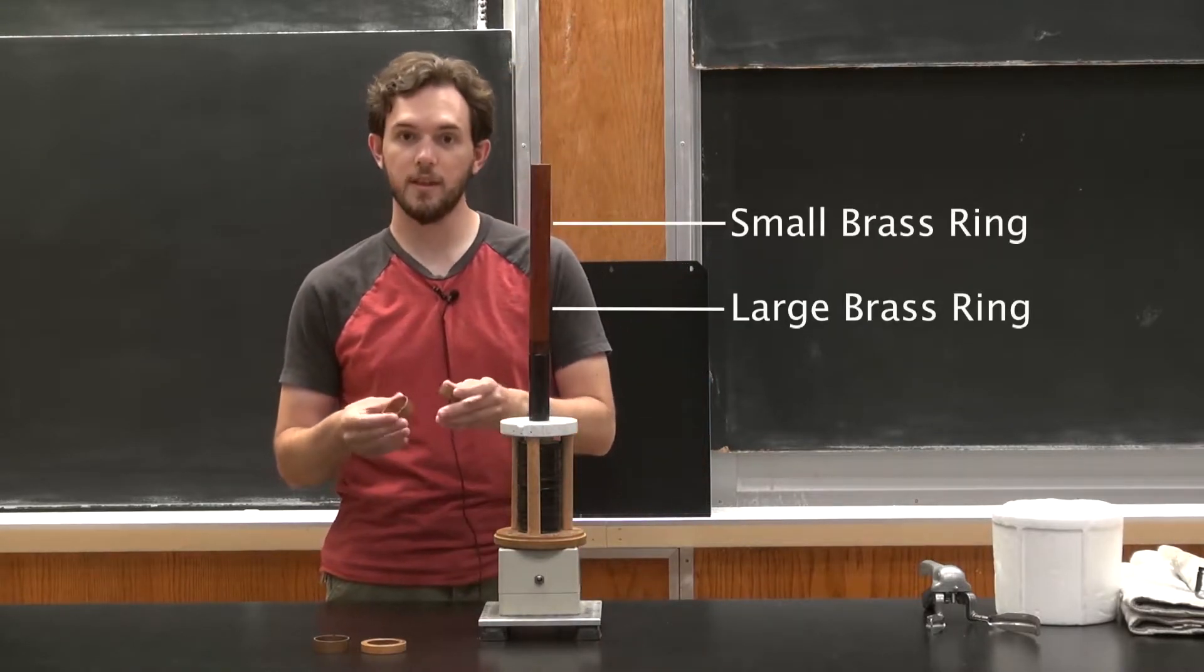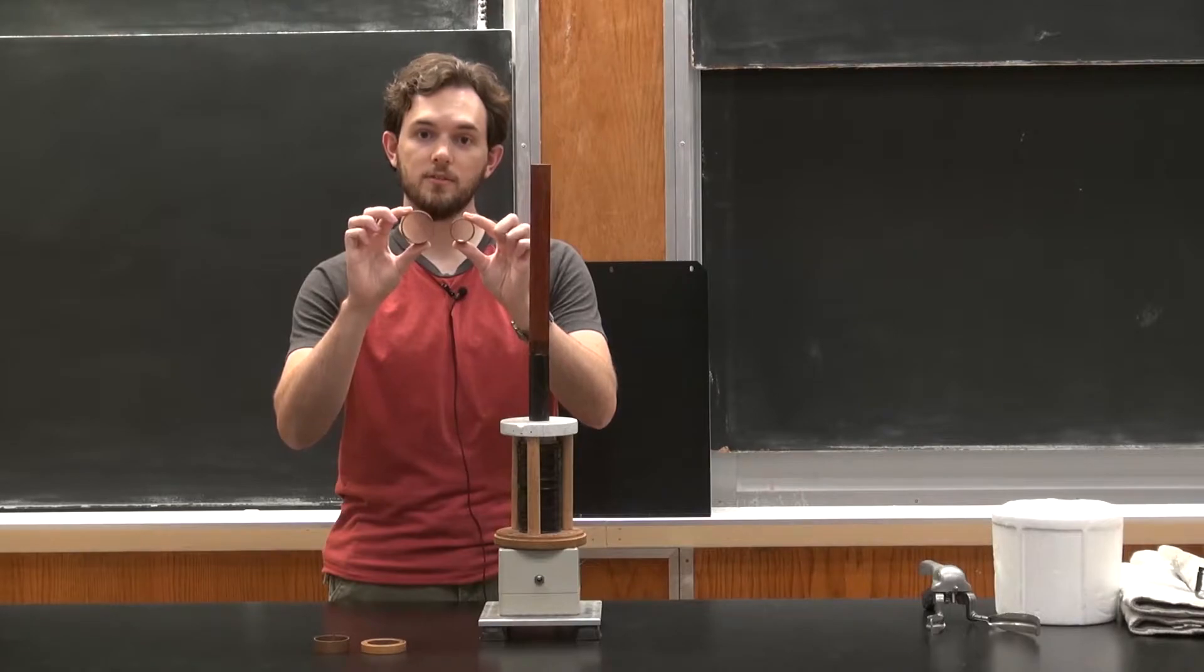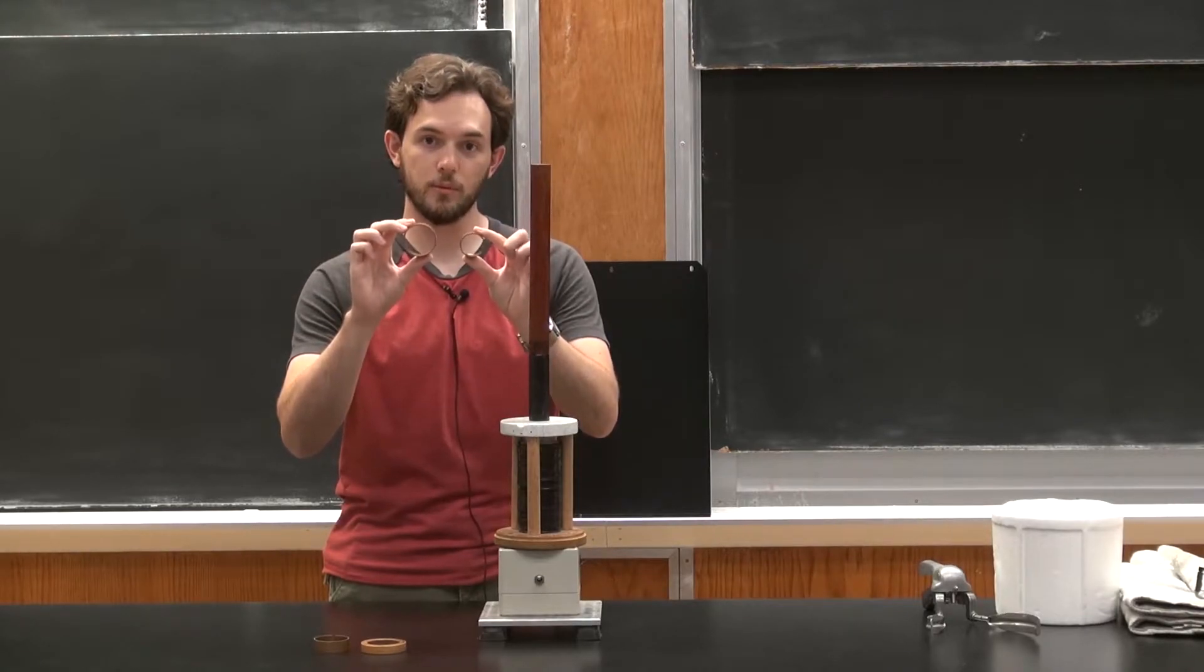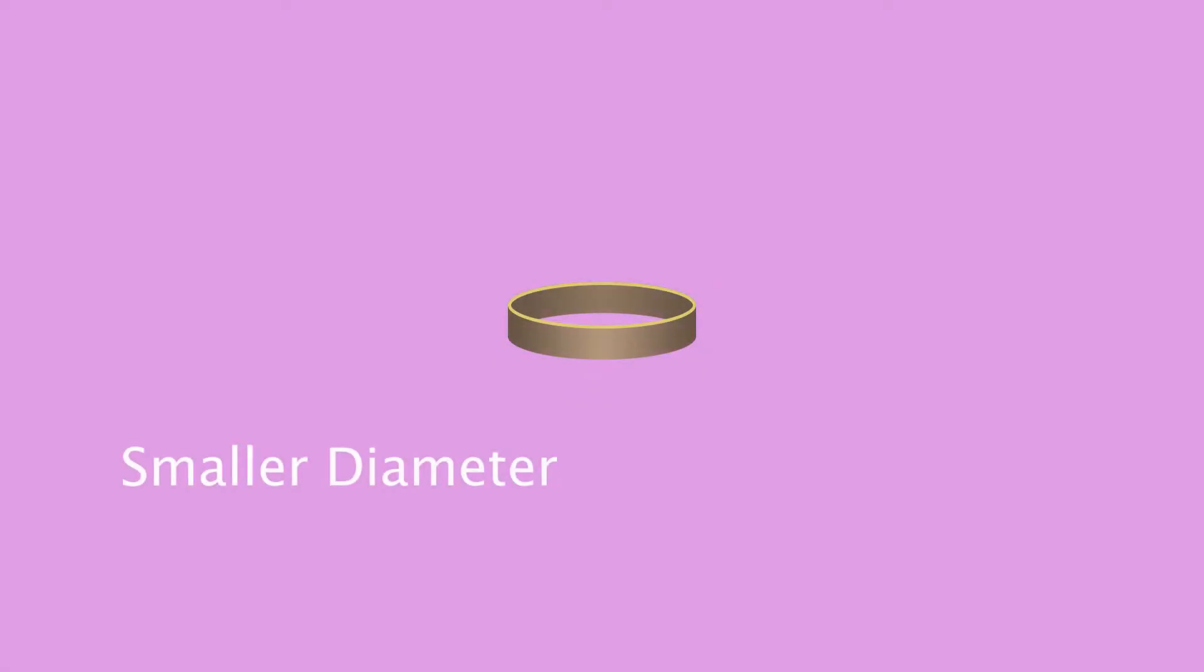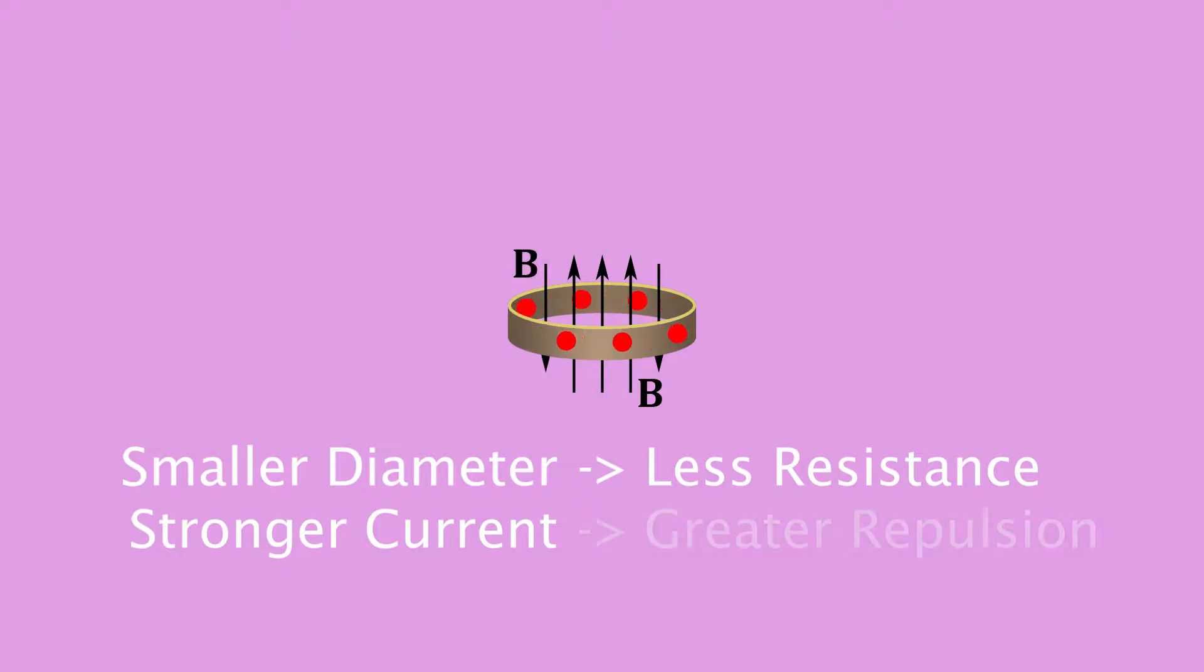And the reason for that difference is that because of their different diameter they have a different amount of total resistance through them. So the ring with a smaller diameter has less resistance and so it can establish a stronger current, and if it's got a stronger current then it can have a higher magnetic field and it can have more magnetic propulsion, and so it actually ends up with a larger force on it. Also it's lighter which helps.